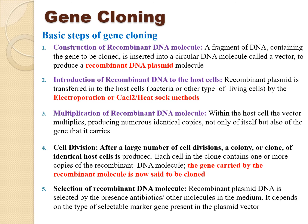There are five basic steps involved in gene cloning. The first step is the construction of a recombinant DNA molecule. This happens through a fragment of DNA which contains the gene to be cloned, and is inserted into a circular DNA molecule called a vector, to produce a recombinant DNA plasmid molecule.